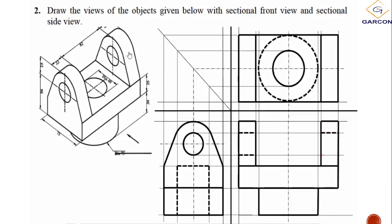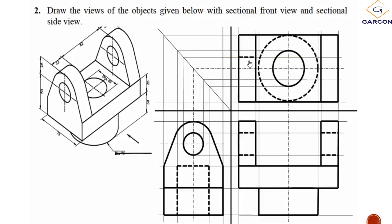Hidden detail lines are added for the circles showing that they pass all the way through. The hidden detail lines for these ones are also added up here, and that completes the orthographic projection drawing.